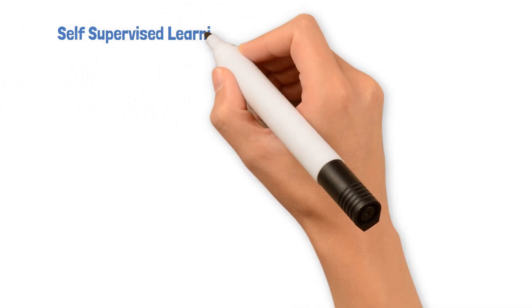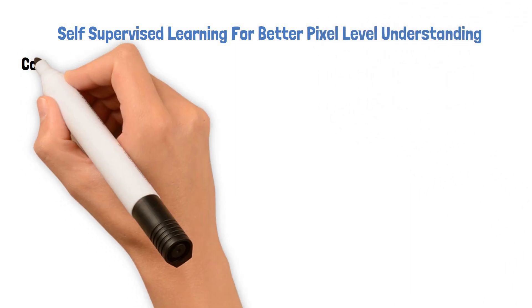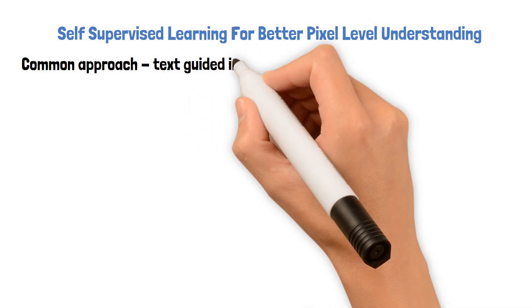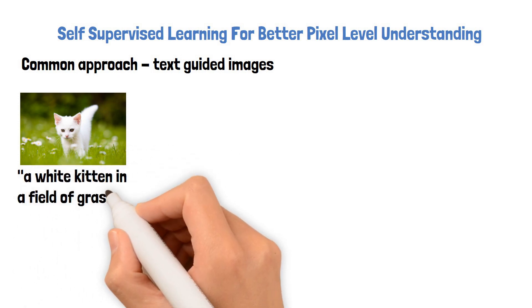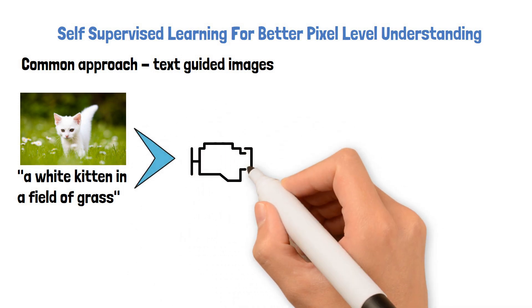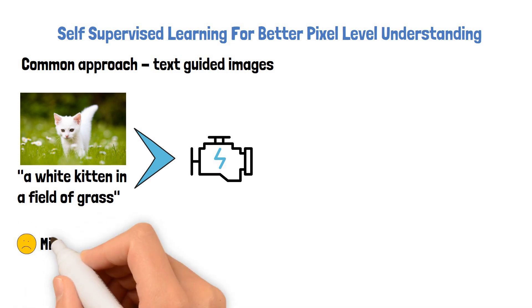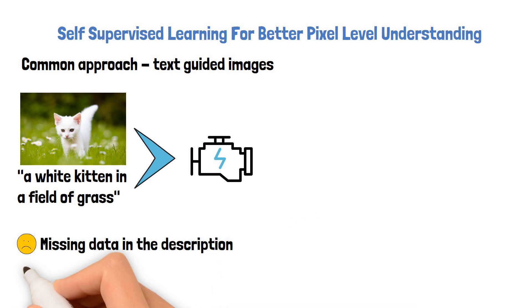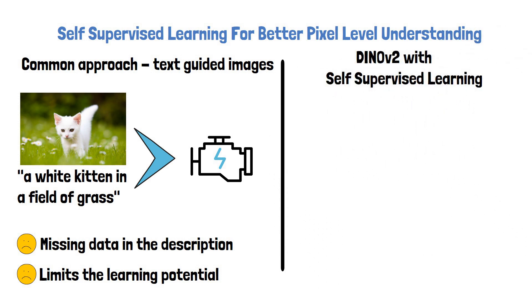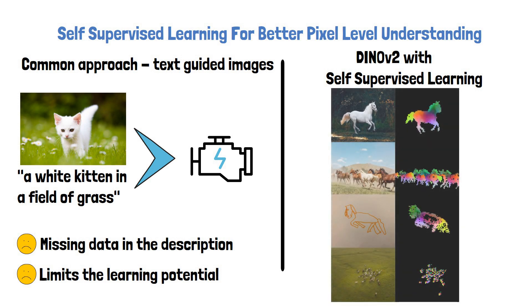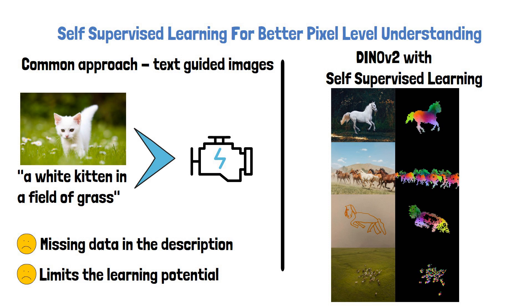Another benefit of self-supervised learning is better pixel-level understanding. A common approach in computer vision nowadays is text-guided pre-training, where a cat image would come with a description text such as 'a white kitten in a field of grass,' and both the image and text are provided as input. However, the description text may miss details, such as that the cat is walking or the small white flowers, which can limit learning capability. With DynoV2 and self-supervised learning, they showed the model has an amazing capability to learn pixel-level information. As an example, we can see multiple horse images, and when visualizing DynoV2's output on them, horses in different pictures get similar colors for the same body parts, even if there are multiple horses in a picture, and even if they are super tiny — very impressive!